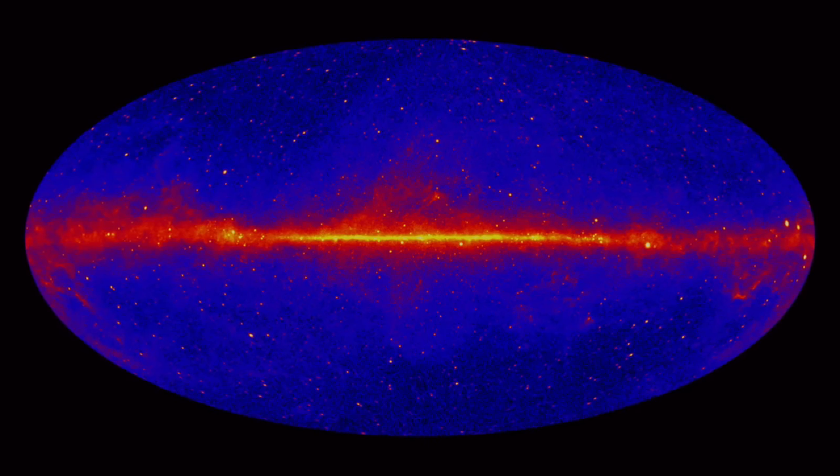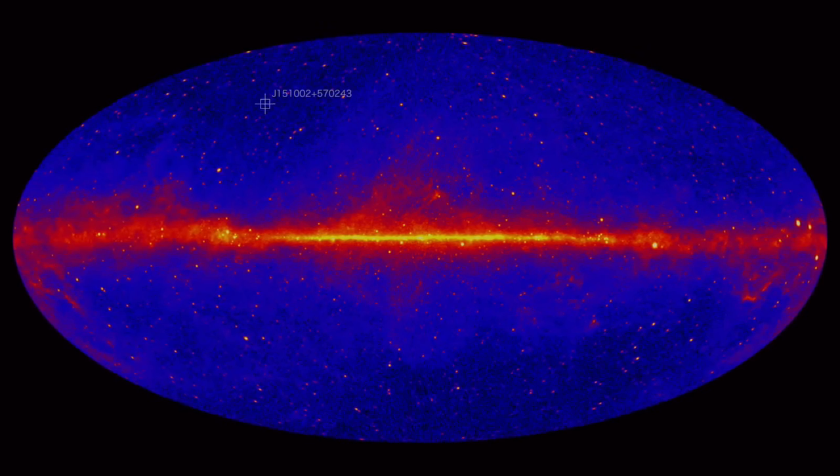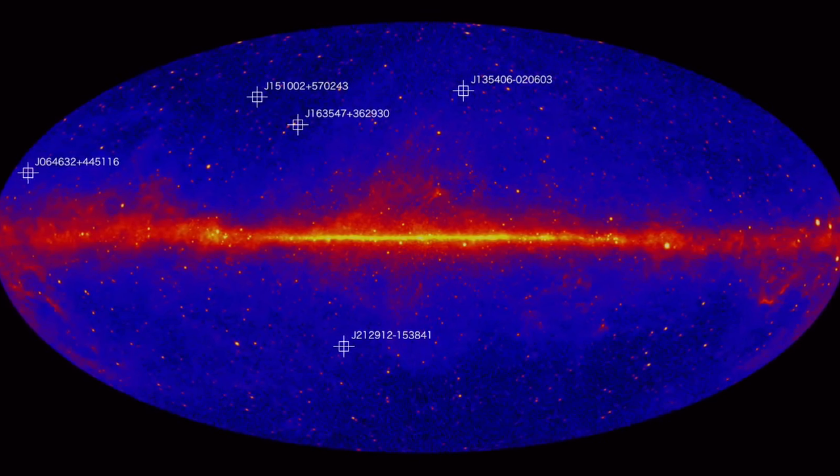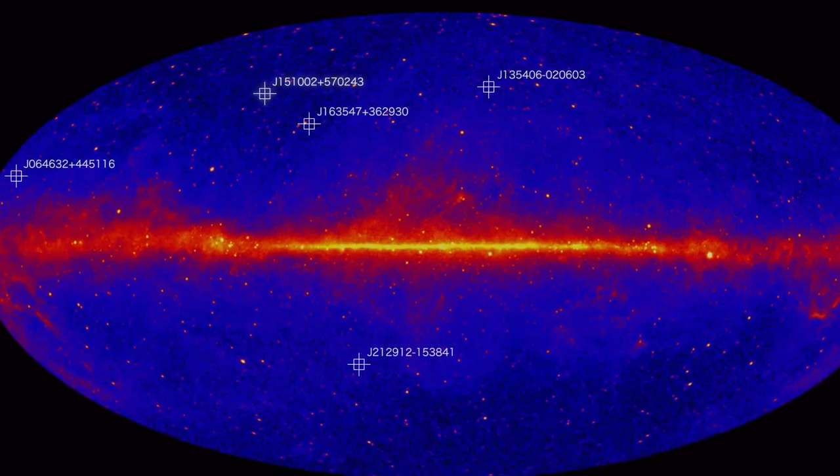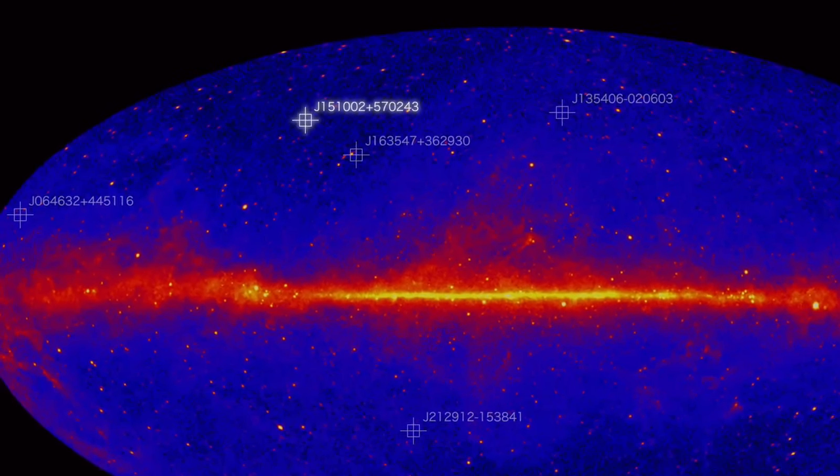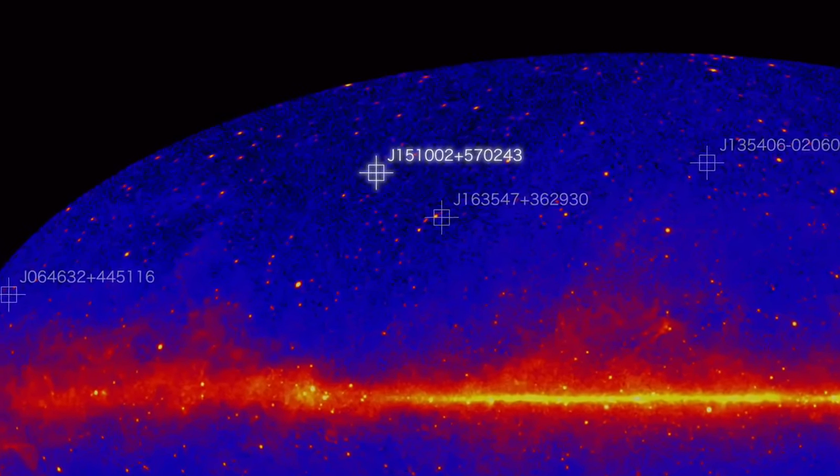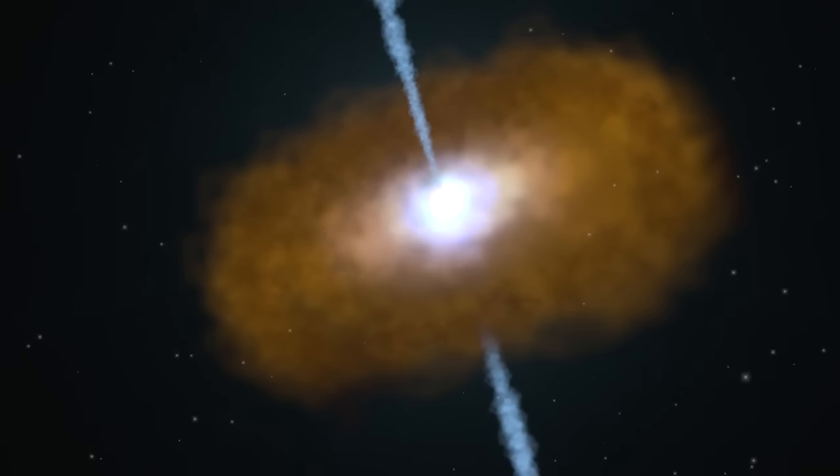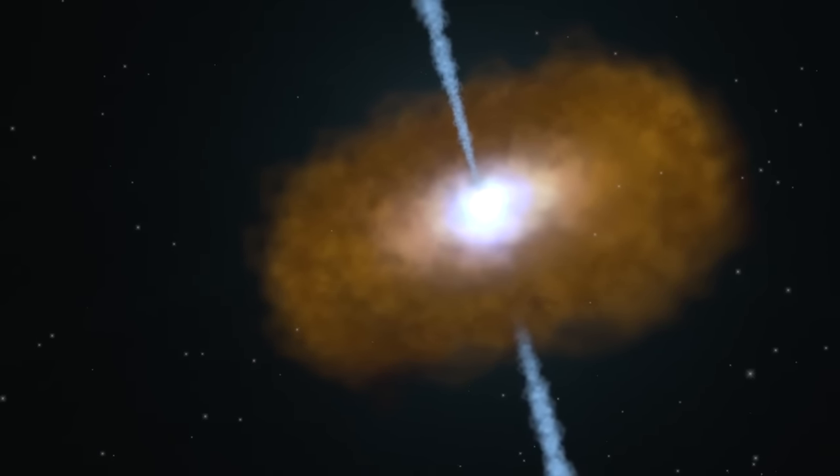Fermi team members have identified five of the most distant gamma-ray blazars known. The record holder emitted its light when the universe was just one-tenth its current age. That object hosts a black hole with a mass of about three billion suns.